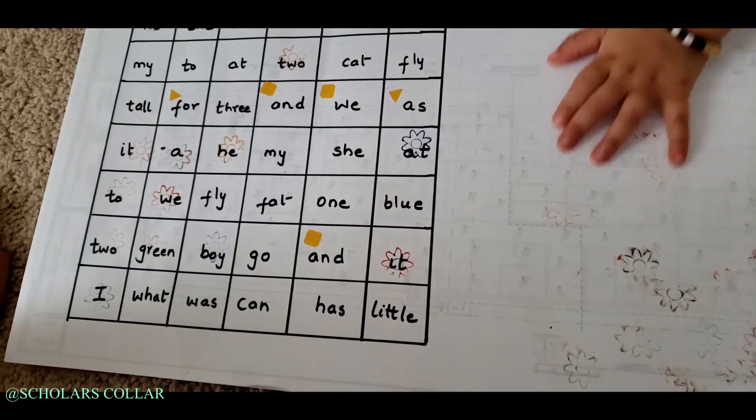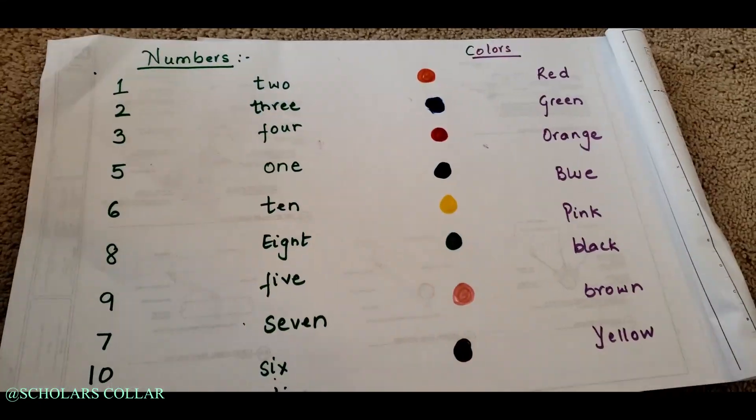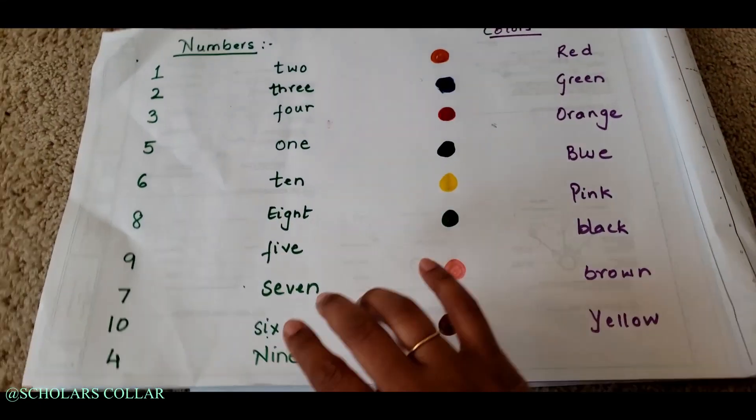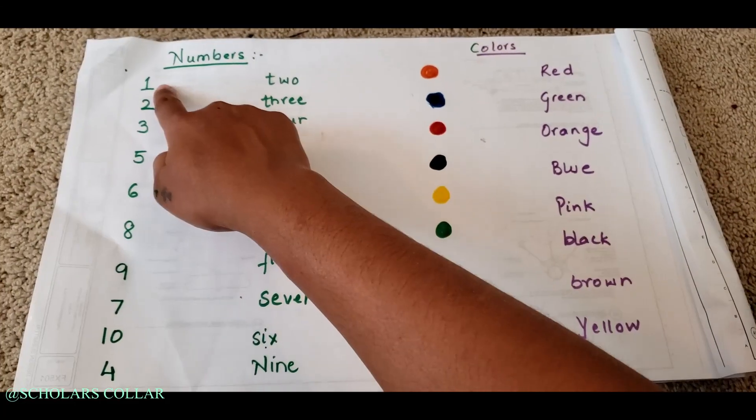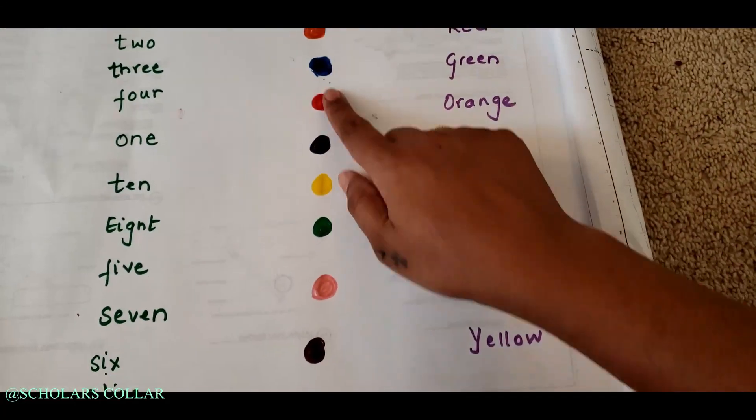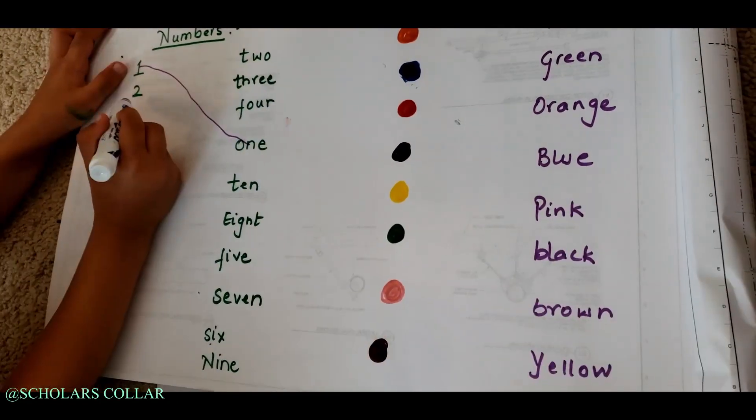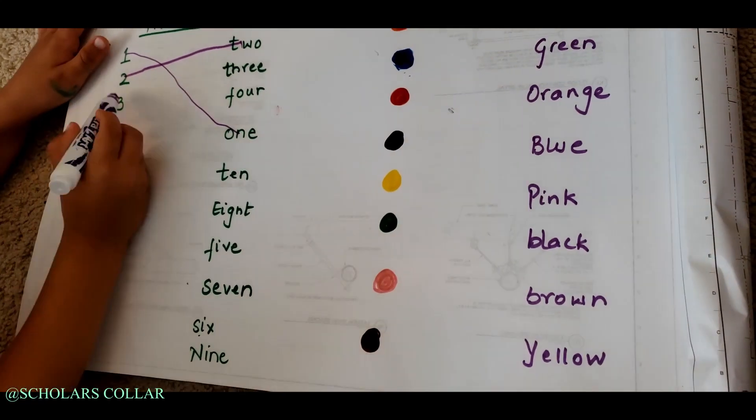This is our seventh sight word activity: matching. It's very simple and easy. You write numbers and colors on one side and the names of numbers and colors on the other side. Your child has to match the name to the color and the number to the name.